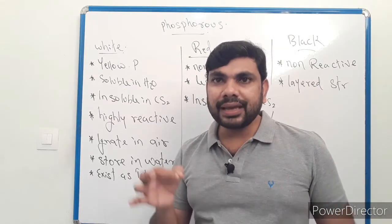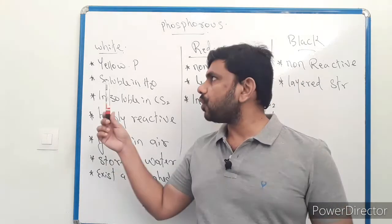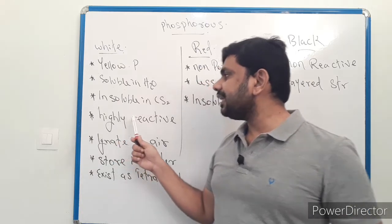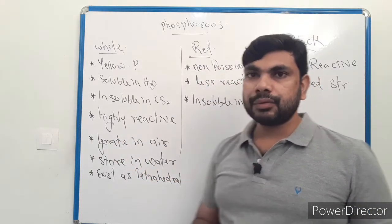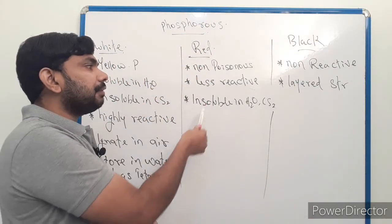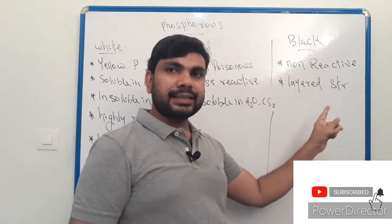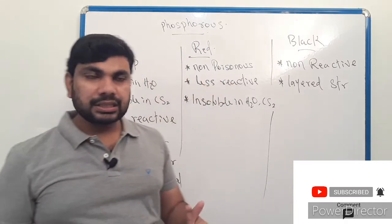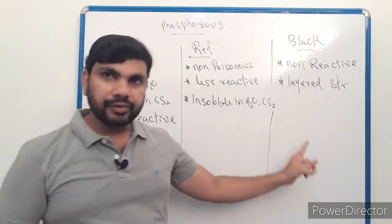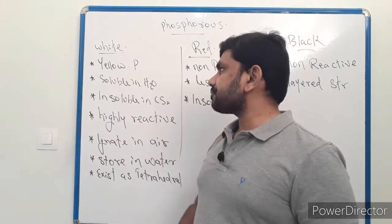In terms of reactivity: white phosphorus is the most reactive form, red phosphorus is less reactive, and black phosphorus is non-reactive. White, red, black — highly reactive, less reactive, non-reactive.